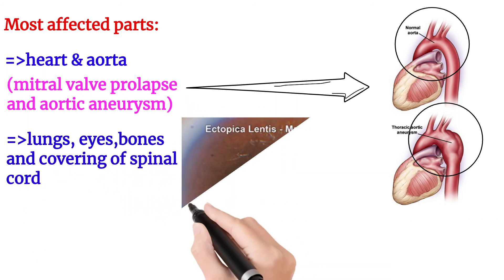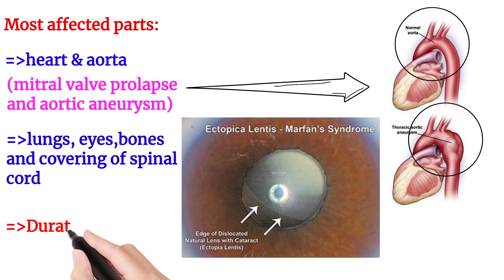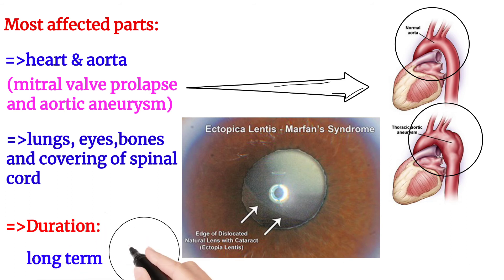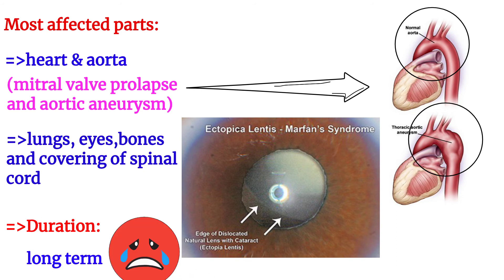The lungs, eyes, bones, column, and spinal cord are also affected. In the eyes, the lens is dislocated from its normal position, which is called bilateral ectopia lentis. The duration of Marfan syndrome is lifelong.